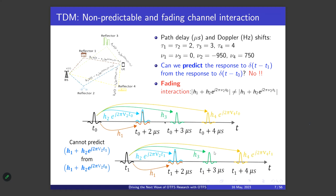We receive only three pulses instead of four because reflectors one and two have the same delay, even though they have different Doppler shifts — reflector one induces 0 Hz, reflector two induces −950 Hz. The key question: if I know the response to an impulse at t = t₀, can I predict the response of the same channel to an impulse at t = t₁?